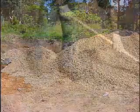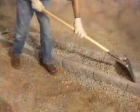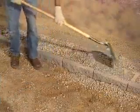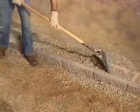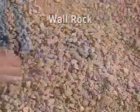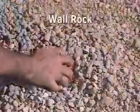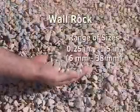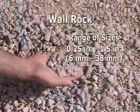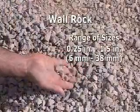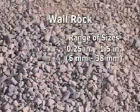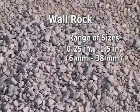Wall rock is used as base material within the block cores as well as behind the blocks. Wall rock must be a compactable aggregate ranging in size from a quarter inch to one and a half inches in diameter. This balanced mix of sizes allows for good compaction.